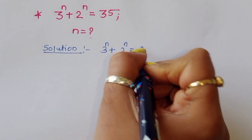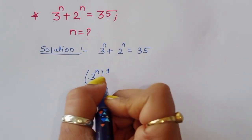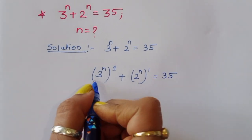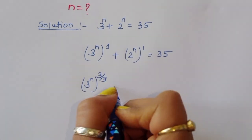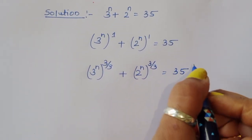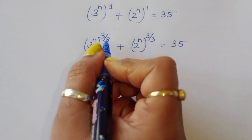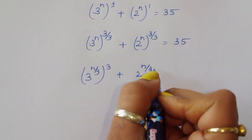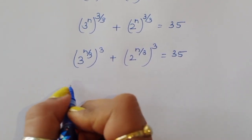We have 3^n + 2^n = 35. We rewrite this using a cube form: 3^n = (3^(n/3))³ and 2^n = (2^(n/3))³. So we write 3^(n/3) cubed plus 2^(n/3) cubed, which equals 35.